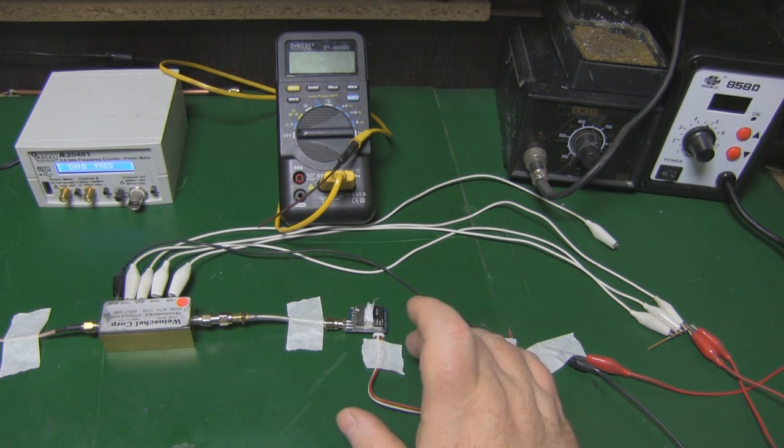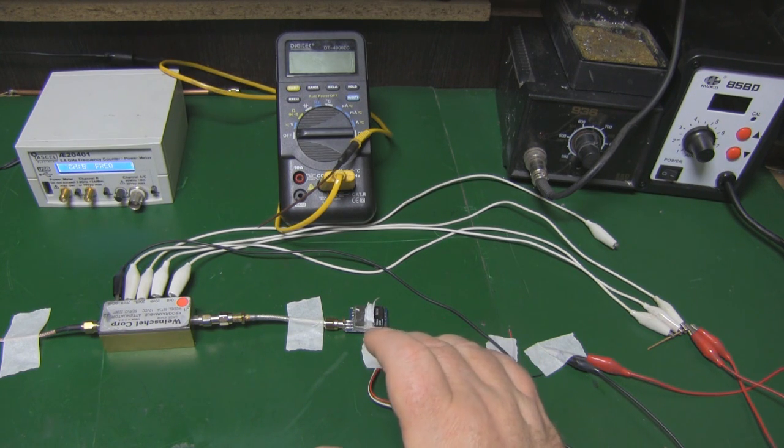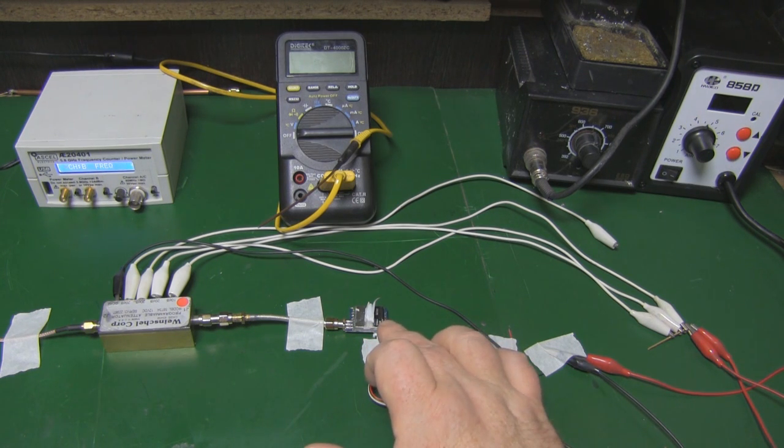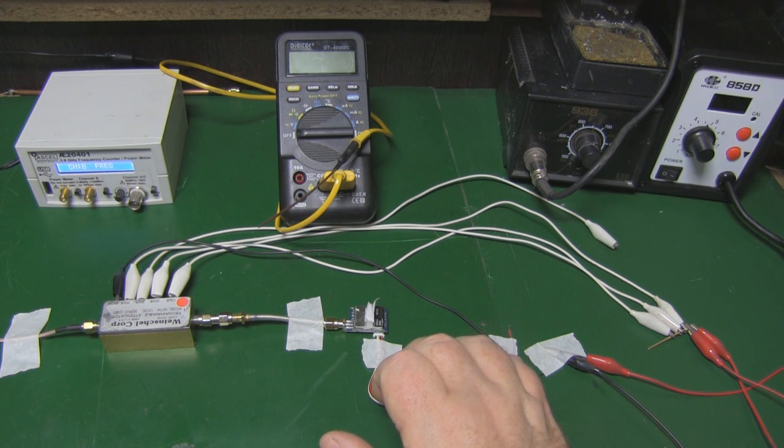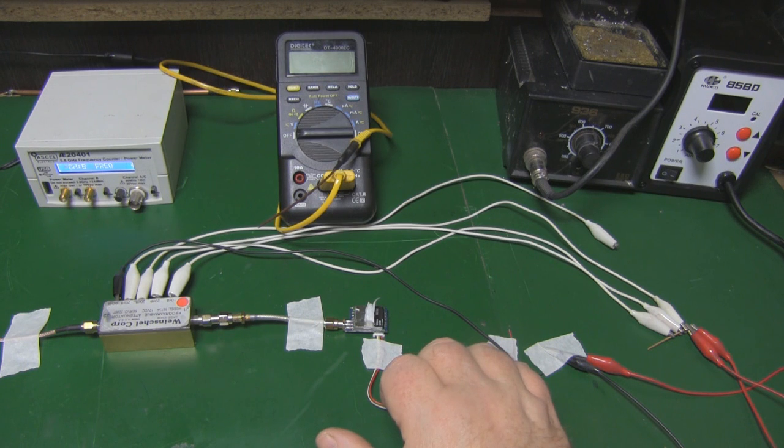Originally I was shooting a video to see how well a 4W 5.8GHz amplifier works with something like this and whether you actually get 4W out of it. But I was getting some inconsistent results and I found out that it was this little transmitter that was giving me the inconsistent results.